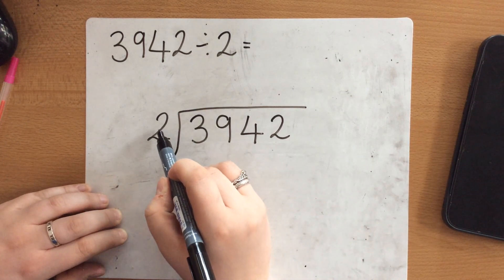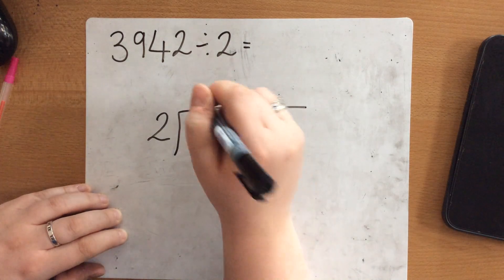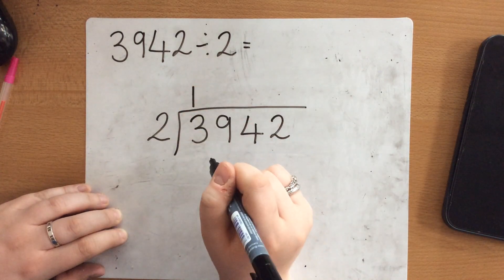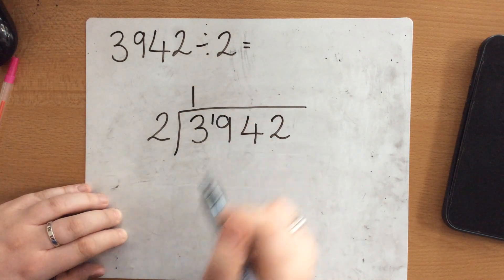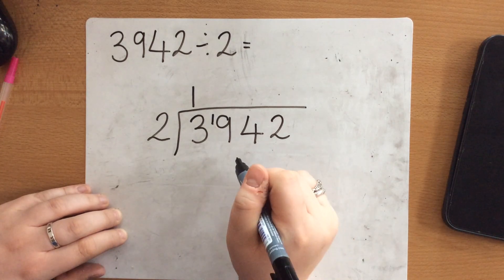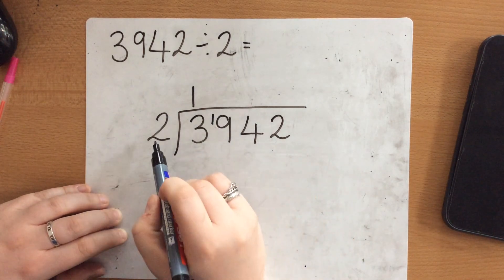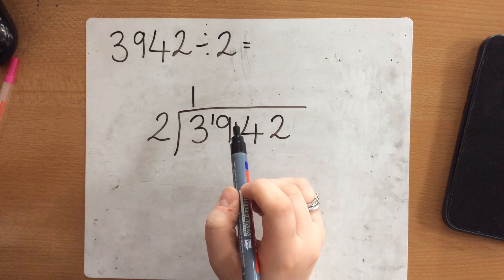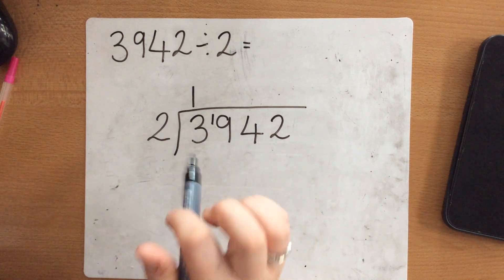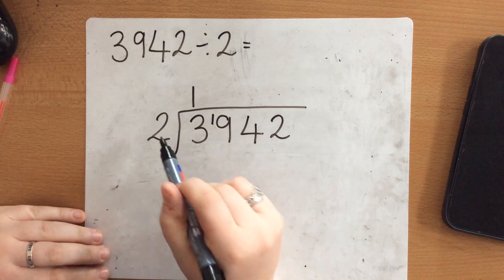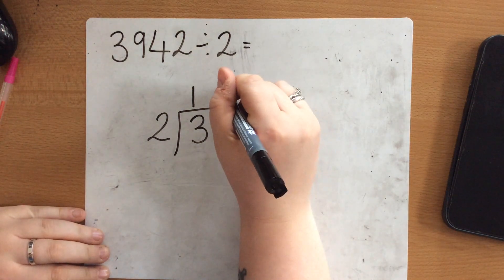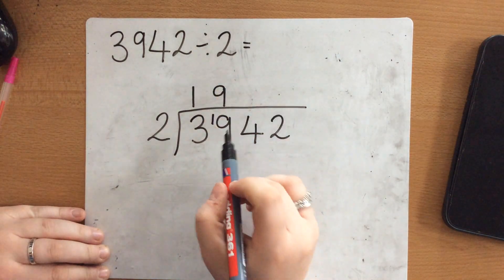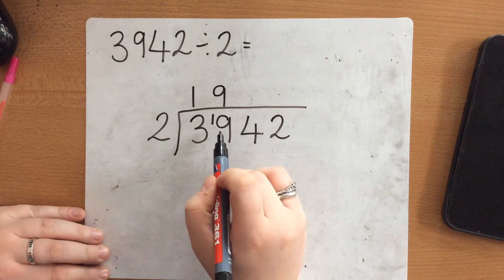So how many 2's go into 3? Well 1 and then there is 1 left over that we carry across to the next number. How many 2's go into 19? Well I know I can go 2, 4, 6, 8, 10, 12, 14, 16, 18. So I can count in my 2 times tables 9 times before I have to stop and I can get to 18.